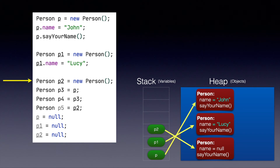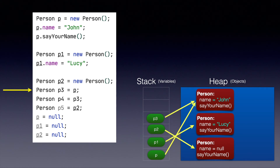Now let's see when this next line is executed. In this case, we are creating another variable called p3, but we are not creating a new object. We are simply storing the address of the object which is stored behind p and assigning it to p3. In the diagram, it looks something like this — we create p3, and now it points to the same object to which p is pointing.